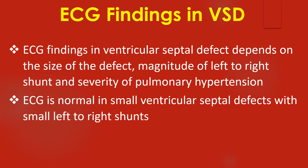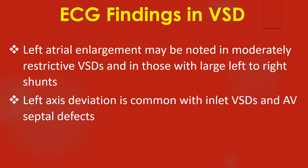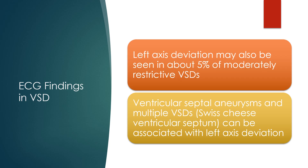ECG findings in ventricular septal defect depend on the size of the defect, the magnitude of left-to-right shunt, and the severity of pulmonary hypertension. ECG is normal in small VSDs with small left-to-right shunts. Left atrial enlargement may be noted in moderately restrictive VSDs with large left-to-right shunts. Left axis deviation is common with inlet VSDs and AV septal defects, and may also be seen in 5% of moderately restrictive VSDs. Ventricular septal aneurysms and multiple VSDs — or Swiss cheese ventricular septum — can also be associated with left axis deviation.